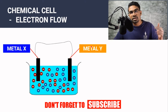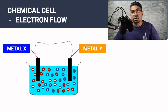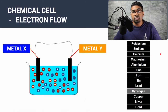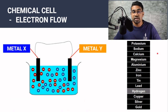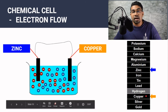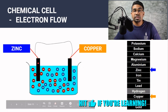Let's say metal X is more electropositive than metal Y. That means metal X has a better tendency to donate electrons compared to metal Y, so metal X will be the one donating electrons. Looking at the electrochemical series — an arrangement of metals according to their electropositivity, where higher position means more electropositive — let's compare zinc and copper. Zinc is at a higher position than copper, so zinc is more electropositive than copper.